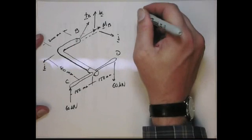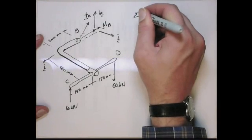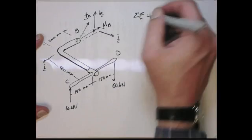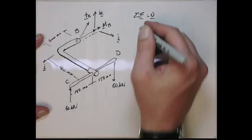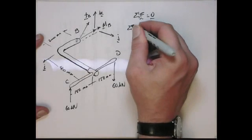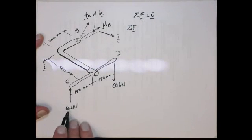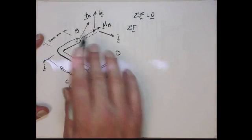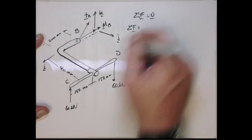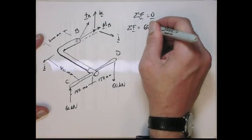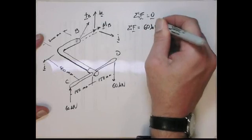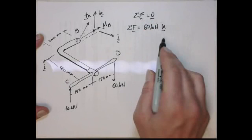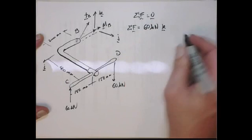Let's do sum of forces. This is going to be a vector sum of forces going to the zero vector. If we do the sum of forces, we have the force here at C, the force at D, and then the internal reaction force at B. So the sum of forces is the force at C, 60 kN, that's acting in the positive k direction. You've got to remember to put the unit vector, otherwise we have a scalar equal to a vector, and that's not appropriate.